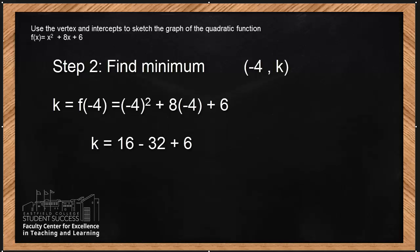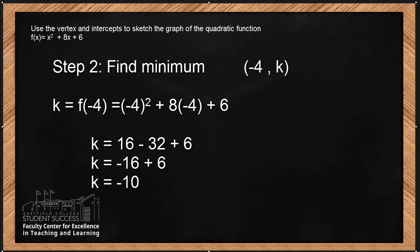Let's make sure we did it right. When we square a negative, negative 4 squared is 16. Now the next set of parentheses: positive 8 times negative 4 gives us negative 32 plus 6. Let's simplify: 16 minus 32 is negative 16 plus 6. Combining like terms, negative 16 plus 6 is negative 10. Hence, we found our k coordinate, which is the y for this particular point, negative 10. Thus, our vertex is negative 4, negative 10. That completes step number two.